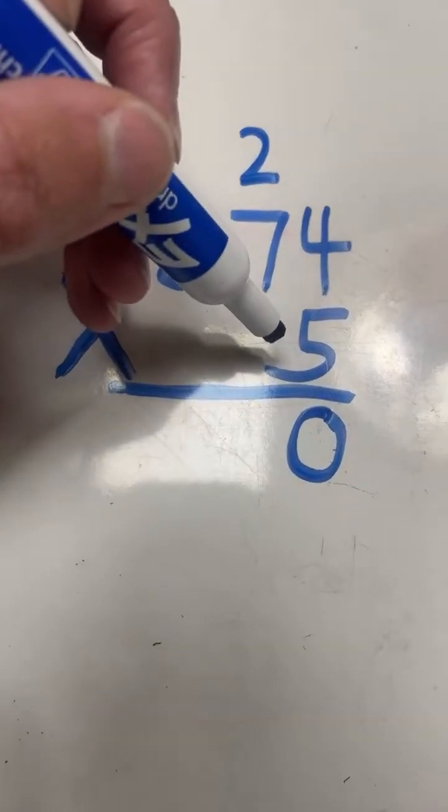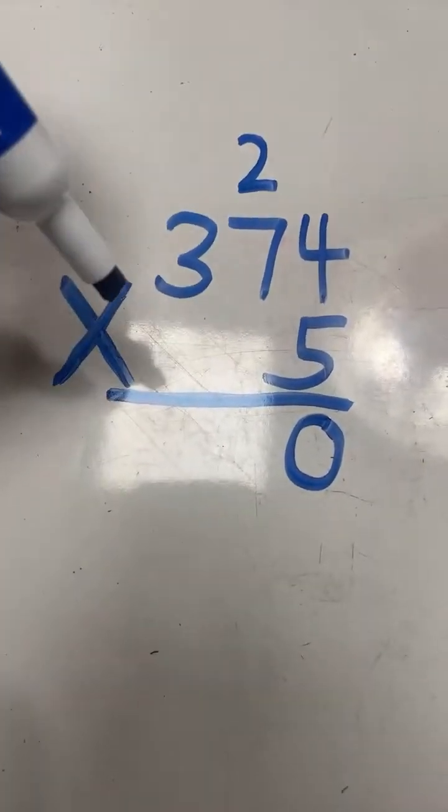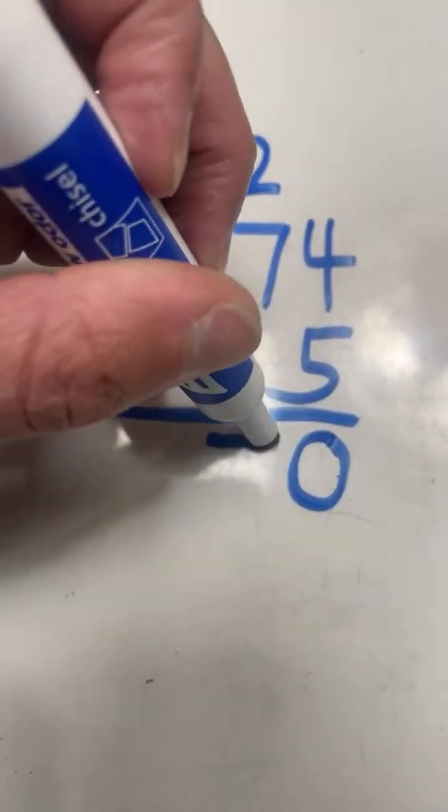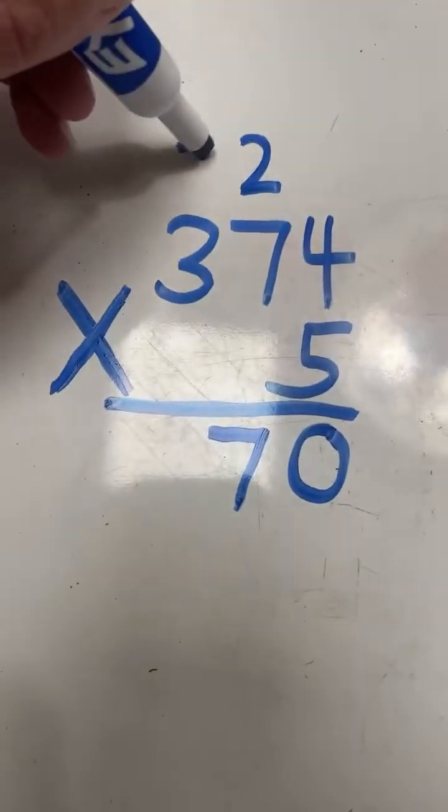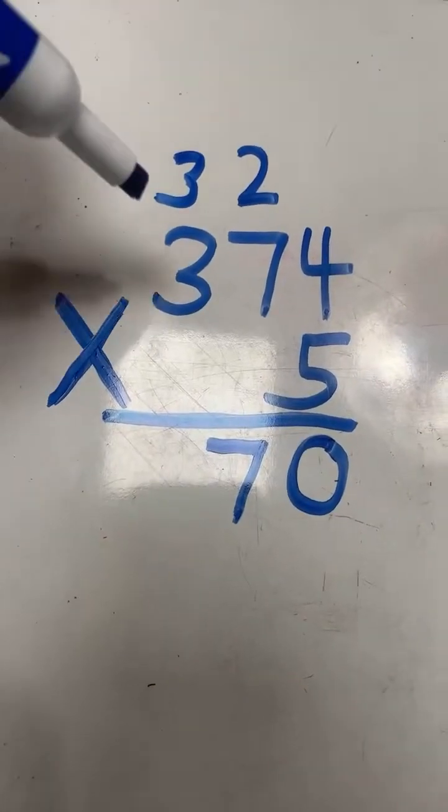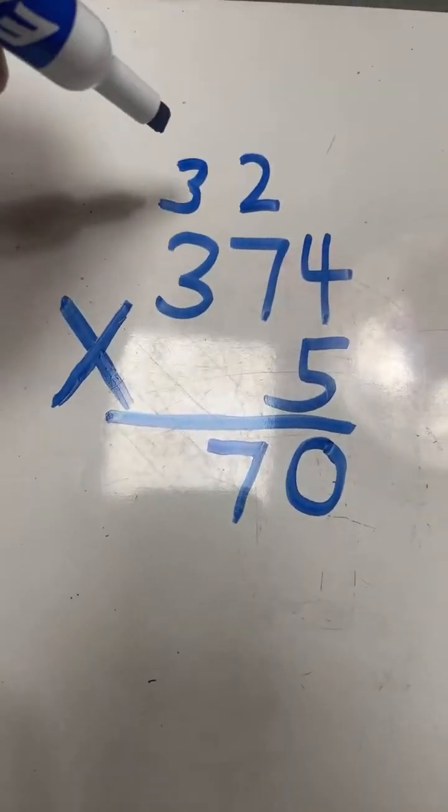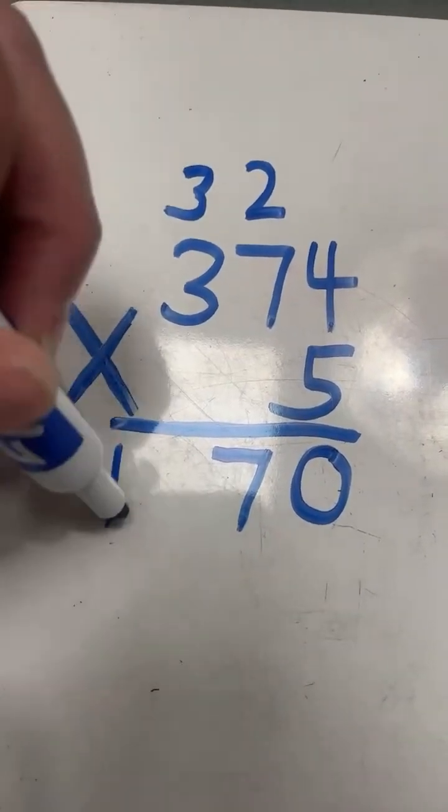7 times 5 equals 35 plus 2 equals 37. 7 in 37 goes in the tens place, the 3 gets carried over to the hundreds place. 3 times 5 equals 15 plus 3 equals 18.